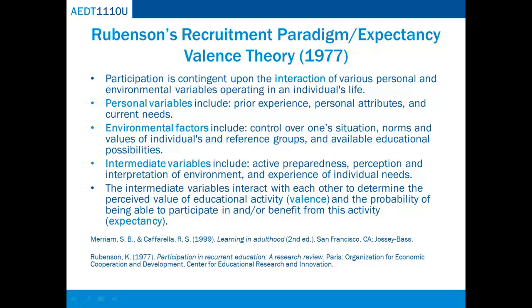The personal and environmental variables do not themselves explain behavior. Rather, the influence of these variables on behavior is mediated by the individual's response to them. This response, in turn, gives rise to intermediate variables, which include active preparedness, perception and interpretation of the environment, and experience of individual needs. The intermediate variables interact with each other to determine the perceived value of the educational activity — the valence — and the probability of being able to participate in or benefit from this activity — the expectancy. The major emphasis in this model is how individual learners perceive themselves, their environments, and what they expect to gain by participating in a learning endeavor.